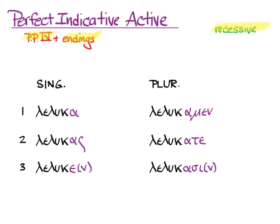Now we need to add recessive accent. We look at the last syllable. We see that it's short. And then we go one, two, three, and put in an acute. We look at the last syllable here now in the second person singular. We see that it's short. We count one, two, three back, and put in an acute. Third person singular, we see that it's short. We count one, two, three, and put in an acute.